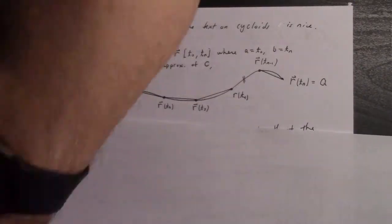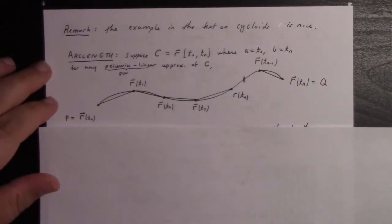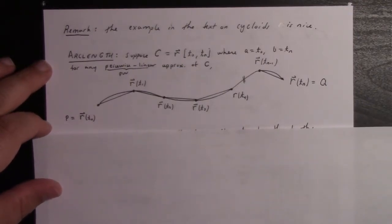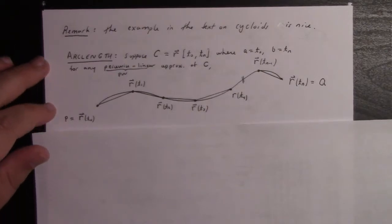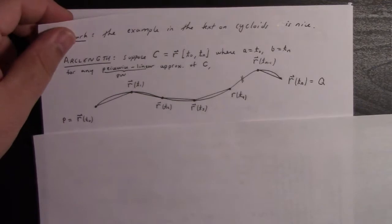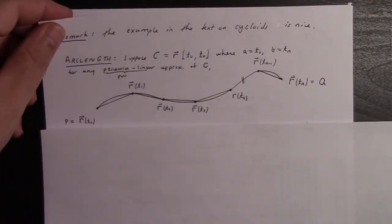Now we can do other things, right? Like we can calculate the arc length of a curve. Let's work through that. By the way, the example in the text on cycloids is nice. I don't have too much to say here in this video about how to plot parametric curves. There's lots of computer algebra systems and websites which do a good job on that. You can also make a table of values. Kind of old school, but that works.